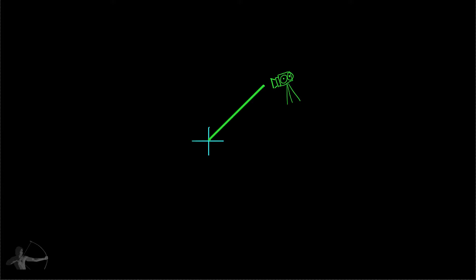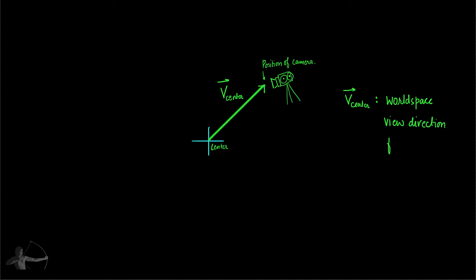Suppose this is a 2D world and this is the center of the world, and at position (10, 10) your camera is placed. A line connecting the center of the world and the position of the camera will be the world space view direction for the center of the world. So this vector, which we call vector v from center, is the world space view direction from the center of the world, which is (0, 0).